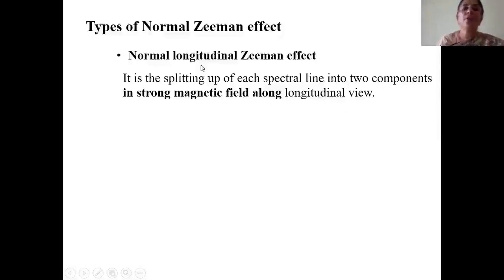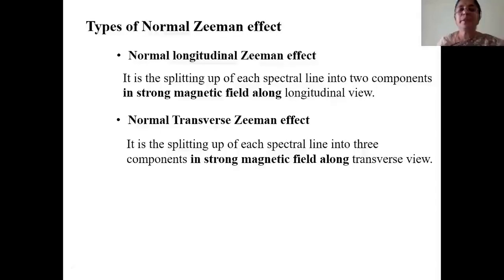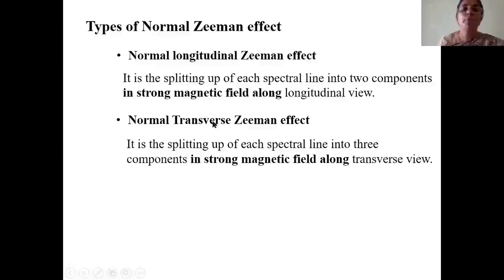The normal transverse Zeeman effect is the splitting of each spectral line into three components in a strong magnetic field when viewed along the transverse direction.